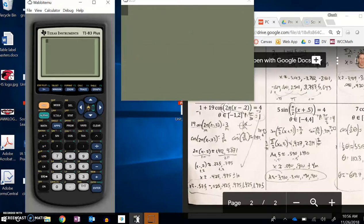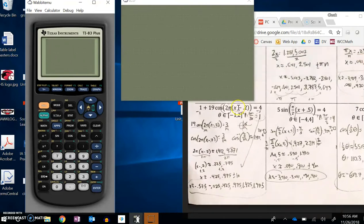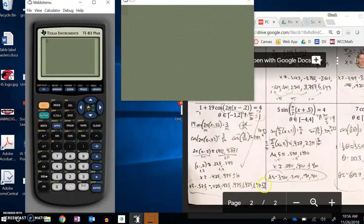I've been asked to make a video to show how to check your solutions on problems like this. When you have your answer, how do you calculate to verify it? The original question was 1 plus 19 cosine times 2π times x minus 0.2 equals 4, and I got these answers for when it should equal 4.